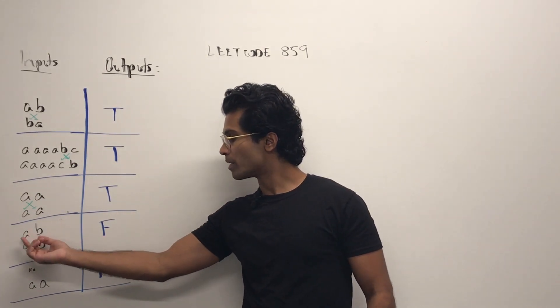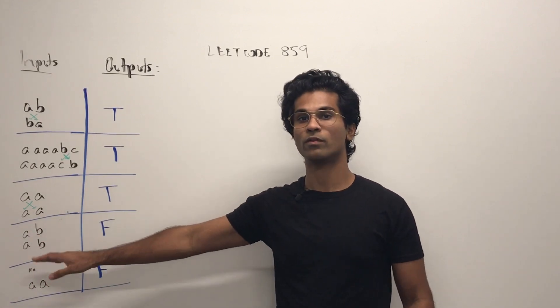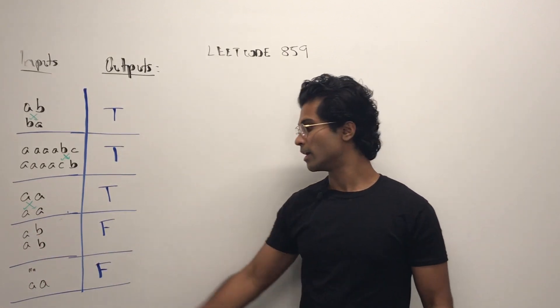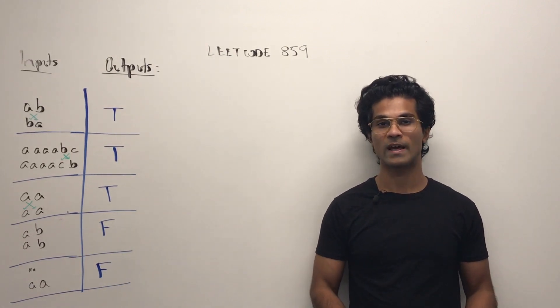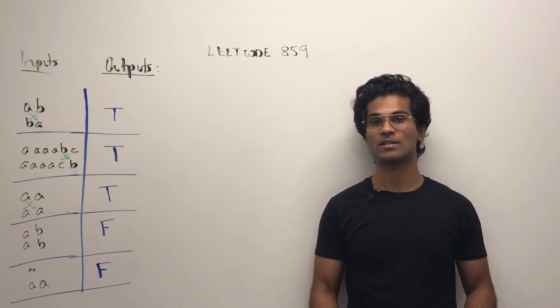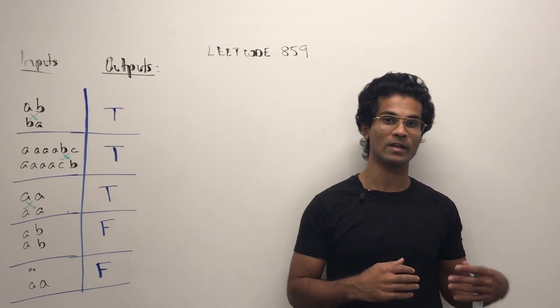Here if we swap A and B we won't get the second string so this is false. And finally if we have two strings that are different lengths we're going to have false because it doesn't matter what we swap we can never make one string equal to the other.